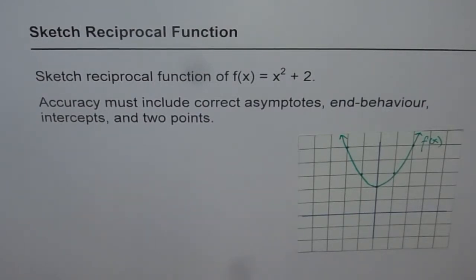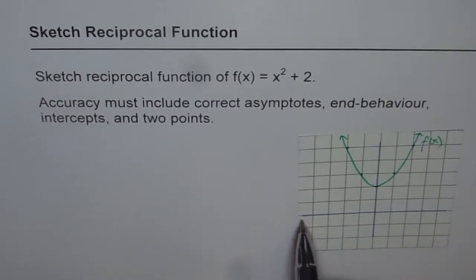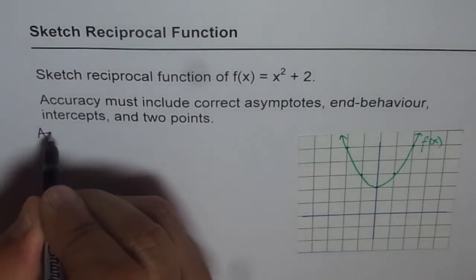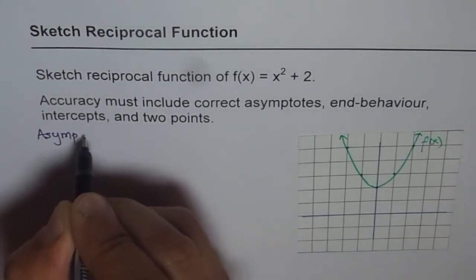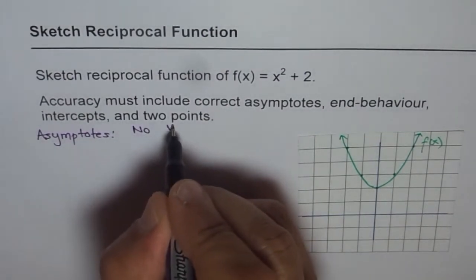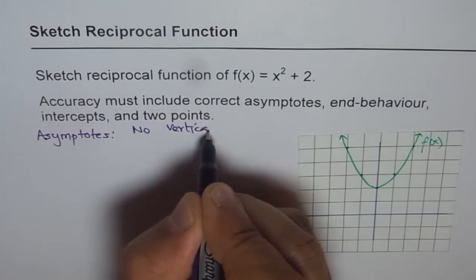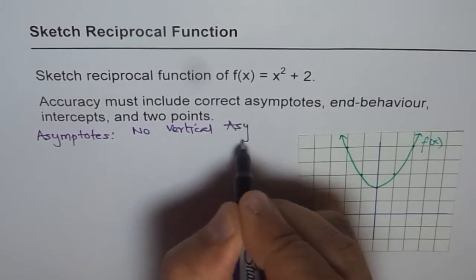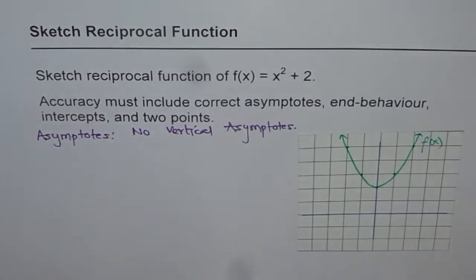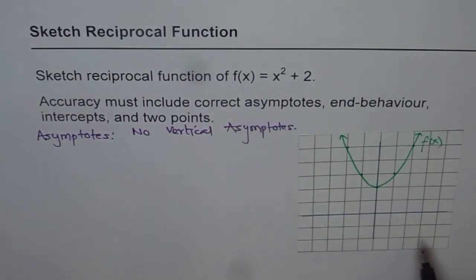So first thing is what kind of asymptotes will it have. Since there is no x-intercept, there are no vertical asymptotes. So that is the first thing we observe. So let's see, how about the asymptotes. So no vertical asymptote. Since there are no x-intercepts, no vertical asymptotes.